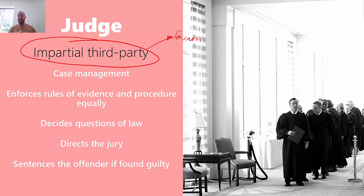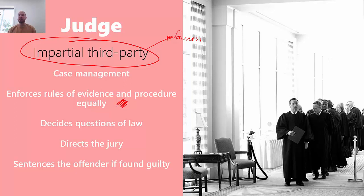The judge is the umpire, the adjudicator. They don't deliver a verdict in indictable offences - that's the jury. But the judge manages everything else. They make decisions on rules of evidence and procedure, applying and enforcing those rules equally. During a trial, that means managing who gets to speak and when, what order things occur in. During the pretrial process, it means enforcing things like what evidence is allowed at trial - whether evidence is admissible or not.